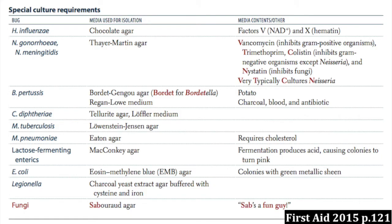So we left off last time talking about the basics of bacteriology, including structure, the way they grow in terms of log growth and log kill. We spoke about their genetics and some of their virulence factors. One thing we didn't quite get to was some of their culture media requirements. I'll just briefly go on to that now — you will have to study it more on your own.